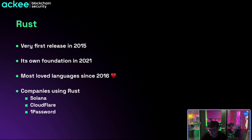The very first release of Rust came in 2015 and it saw rapid growth, establishing its own foundation in 2021 — only six years after the first release. It has been the most loved language since 2016 and its popularity only grows year by year. Many companies use Rust today, including Cloudflare and 1Password, where the fundamentals are already built on the Rust programming language.